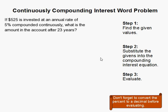This is a continuously compounding interest word problem. If $525 is invested at an annual rate of 5% compounded continuously, what is the amount in the account after 23 years?